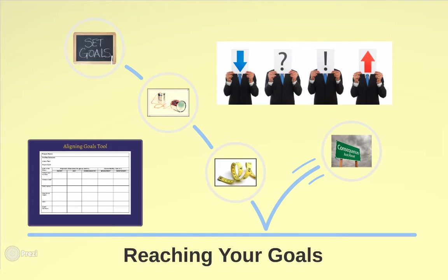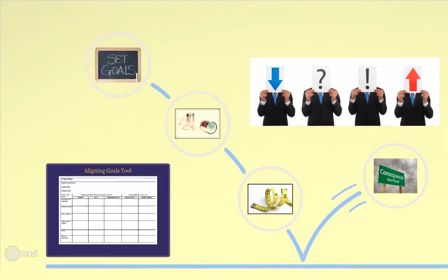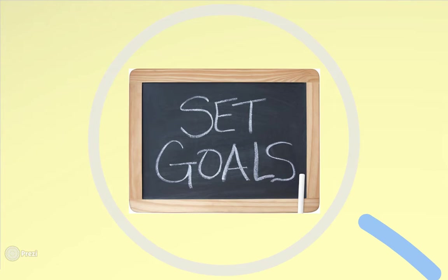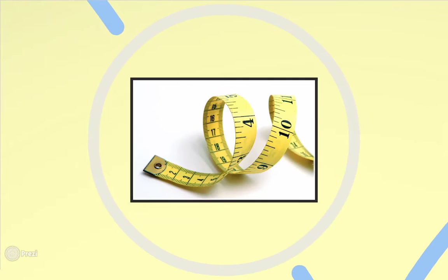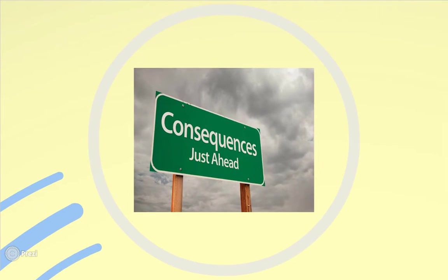Organizations fail to meet goals when their chain of accountability breaks down. Goals are either not set or not communicated effectively, progress is not measured, or consequences for success and failure are not consistently enforced at all levels.